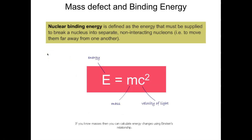Now let's talk about mass defect and binding energy. The binding energy is the energy needed to hold a nucleus together, or equivalently the energy required to break the nucleus apart. This brings us to the famous equation E=mc², which came from Einstein's special relativity paper of 1905. Einstein proposed three things in 1905: the photoelectric effect, which won the Nobel Prize; Brownian motion, which helped confirm the existence of atoms; and the special theory of relativity, which states that matter and energy are interrelated.